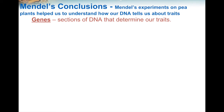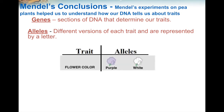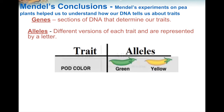We also found out that there are different versions of traits, which we call alleles. For example, with Mendel's pea plants, there are two different versions or alleles for flower color — flowers could either be purple or white. For the trait of seed shape, there were two different versions or alleles — seeds could either be round or wrinkled. For the trait of pod color, there are two different alleles — pod colors could either be green or yellow.